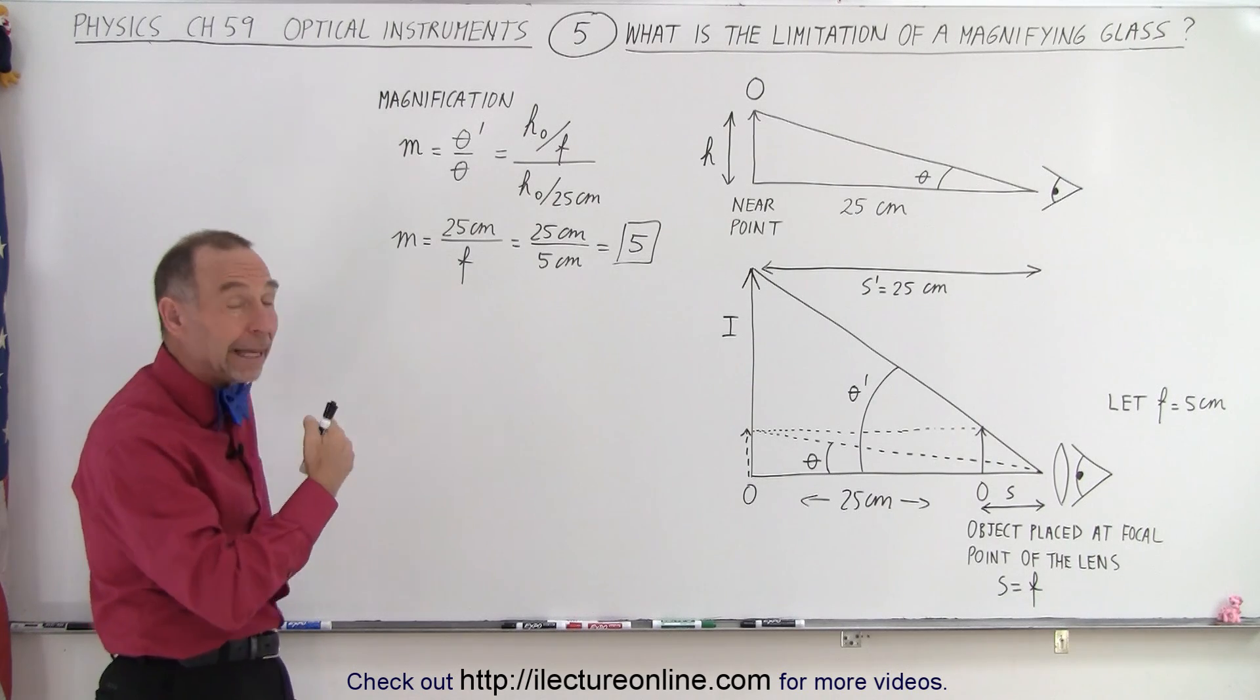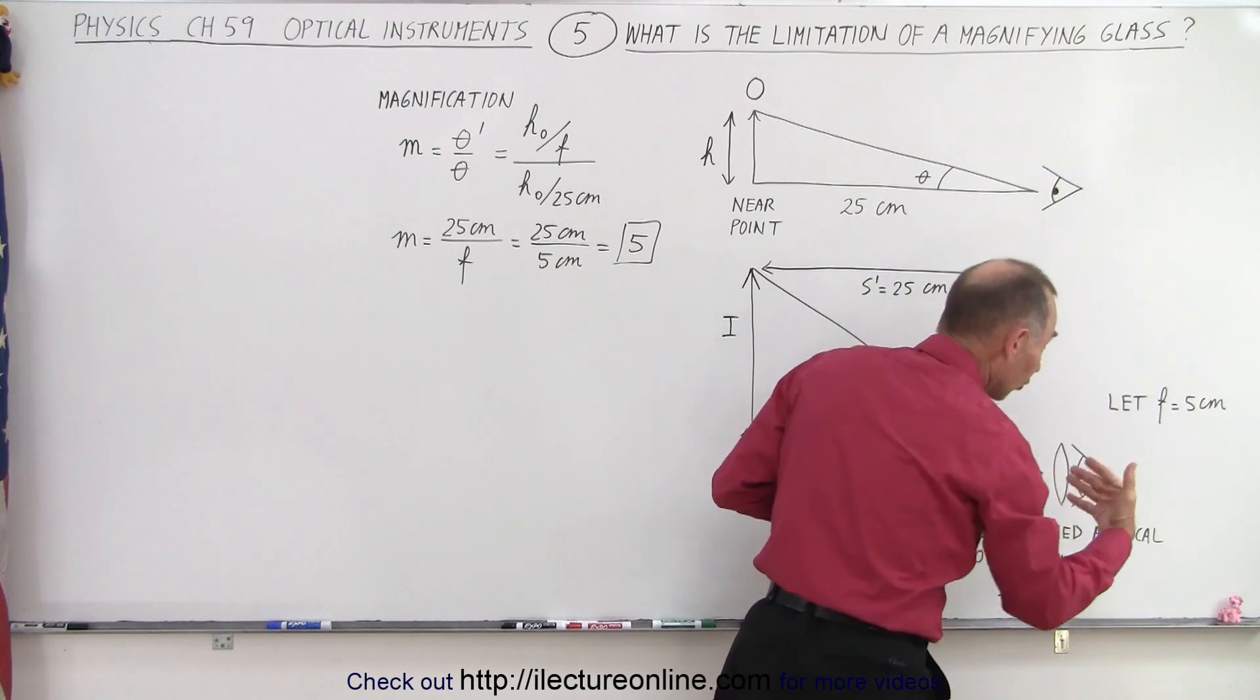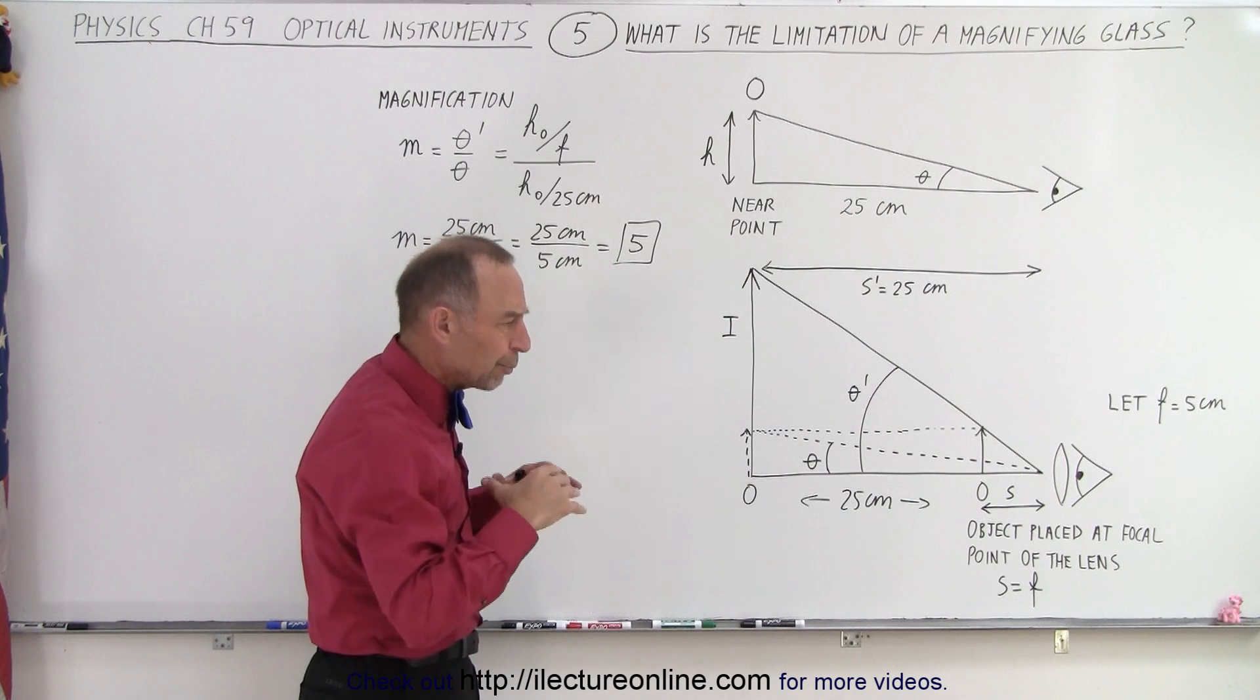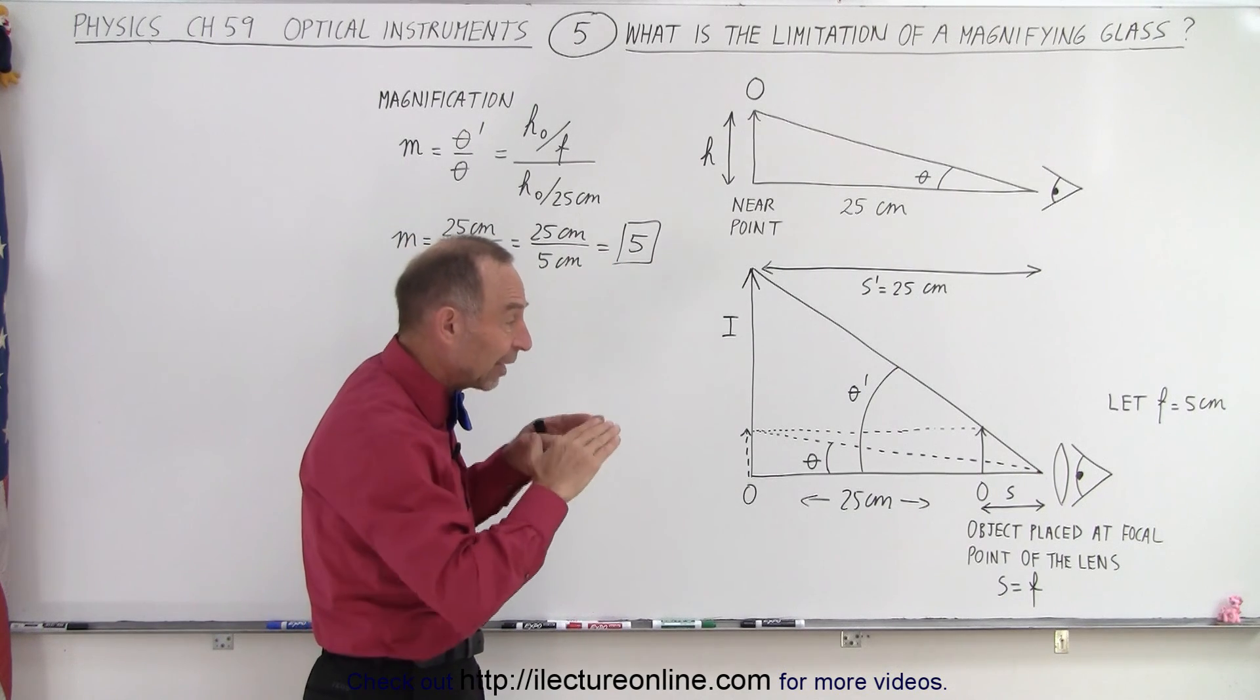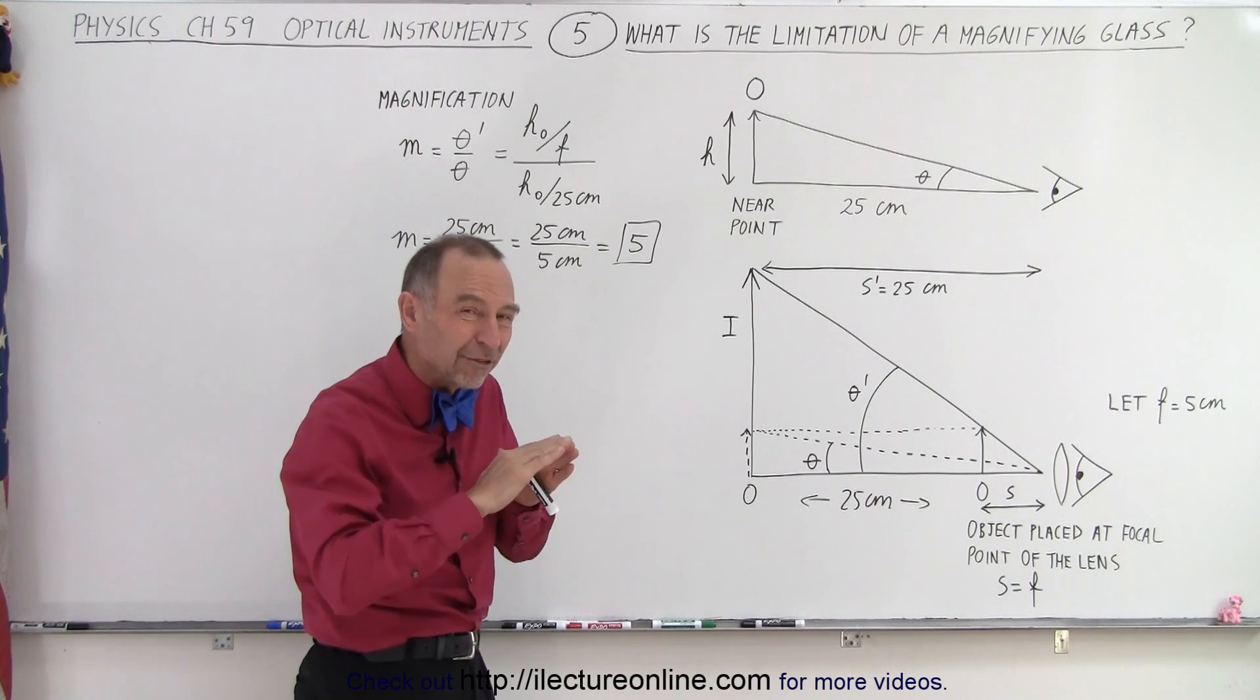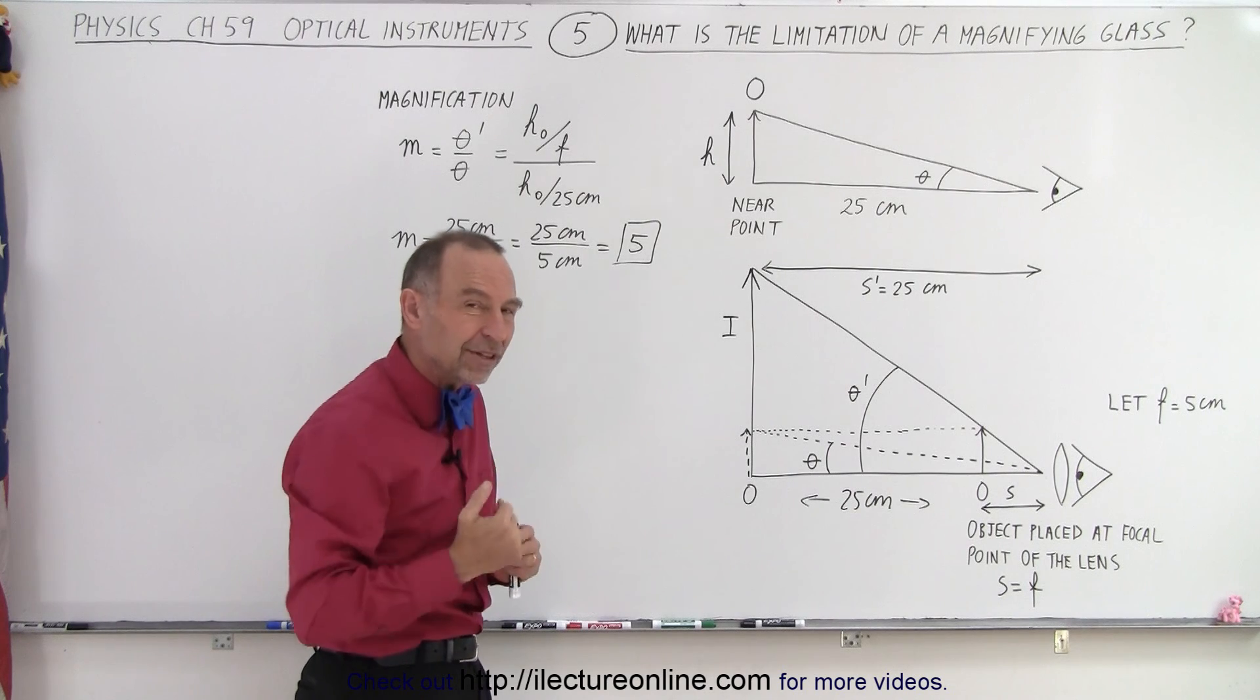Can we then make a lens that even has a smaller focal length, like 2 centimeters, 1 centimeter? The smaller we make the focal length, the larger magnification. The problem with magnifying glasses is that once you begin to make the focal length smaller and smaller, it is very difficult to shape the lens in such a way that you have a clear vision across the entire lens.